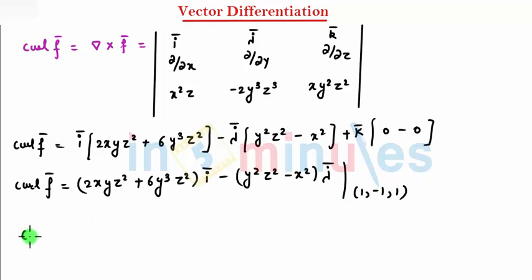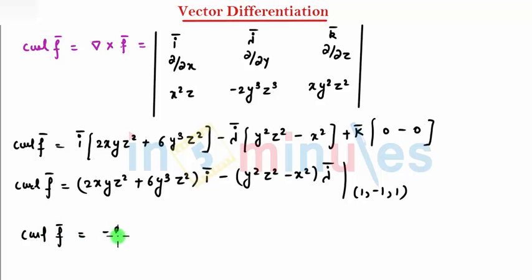After substituting the point (1, -1, 1), I get curl of f̄ equal to -8î. That's my sum completed. Thank you for watching the video on In 5 Minutes.